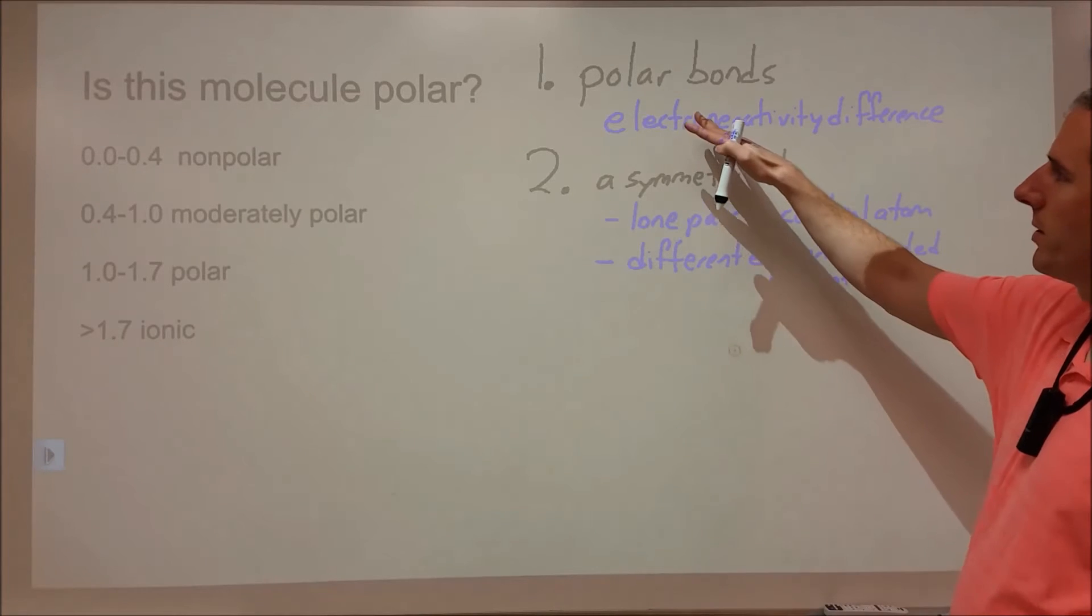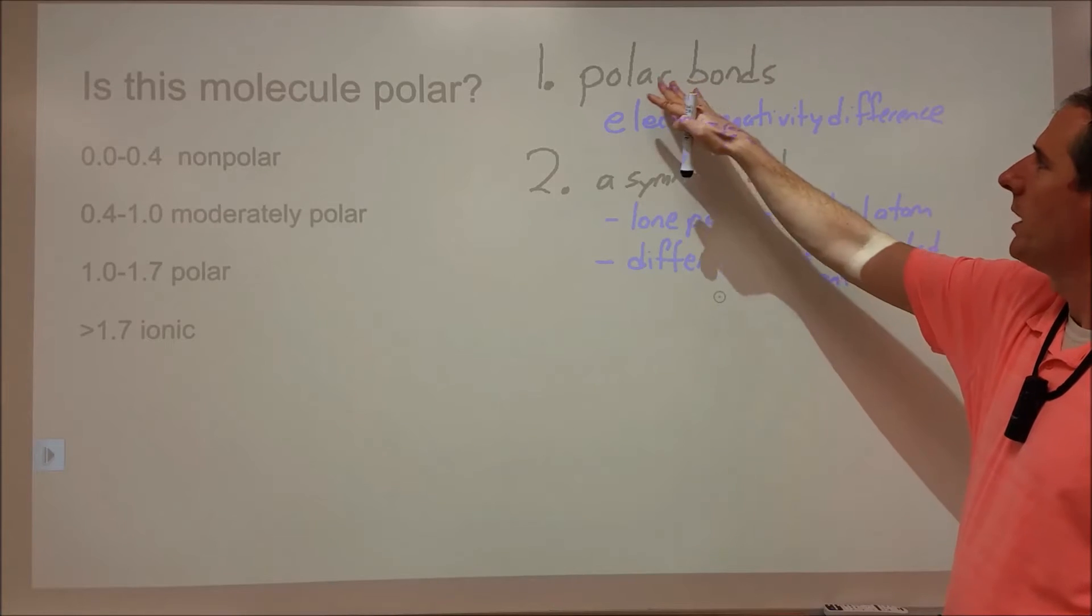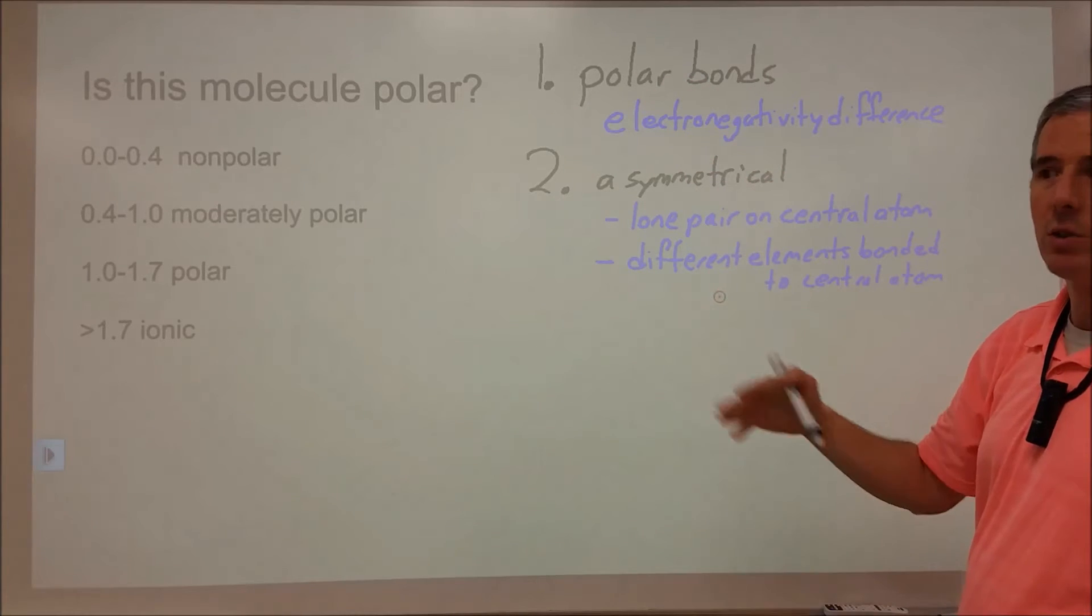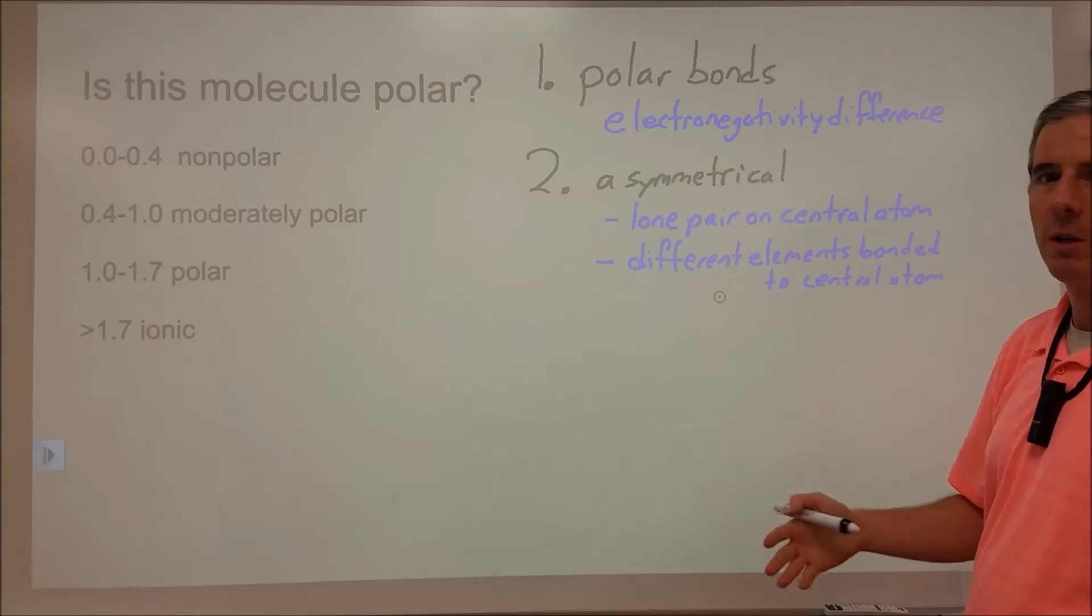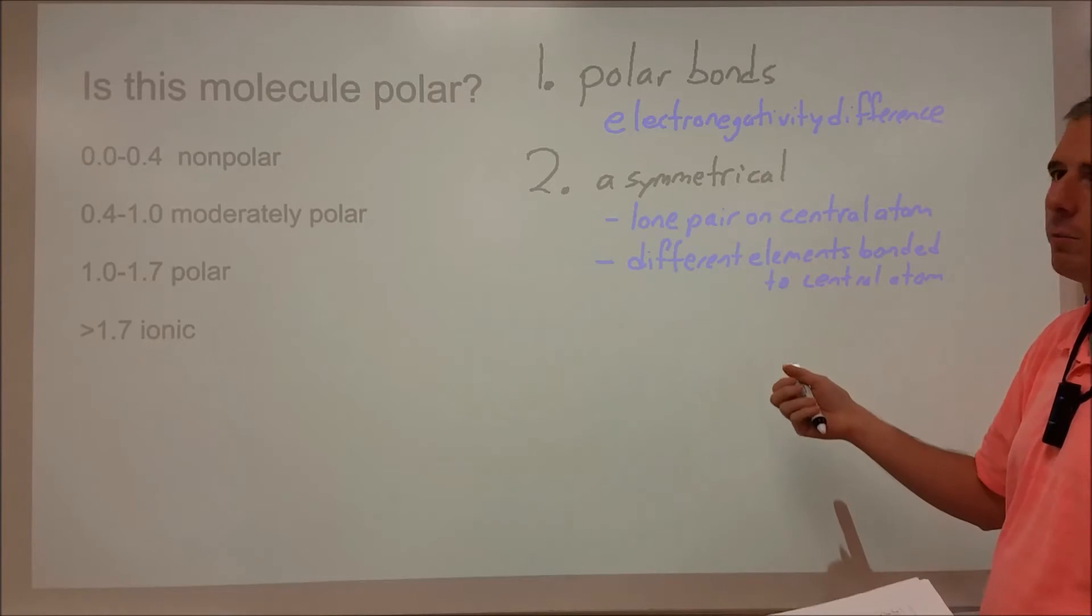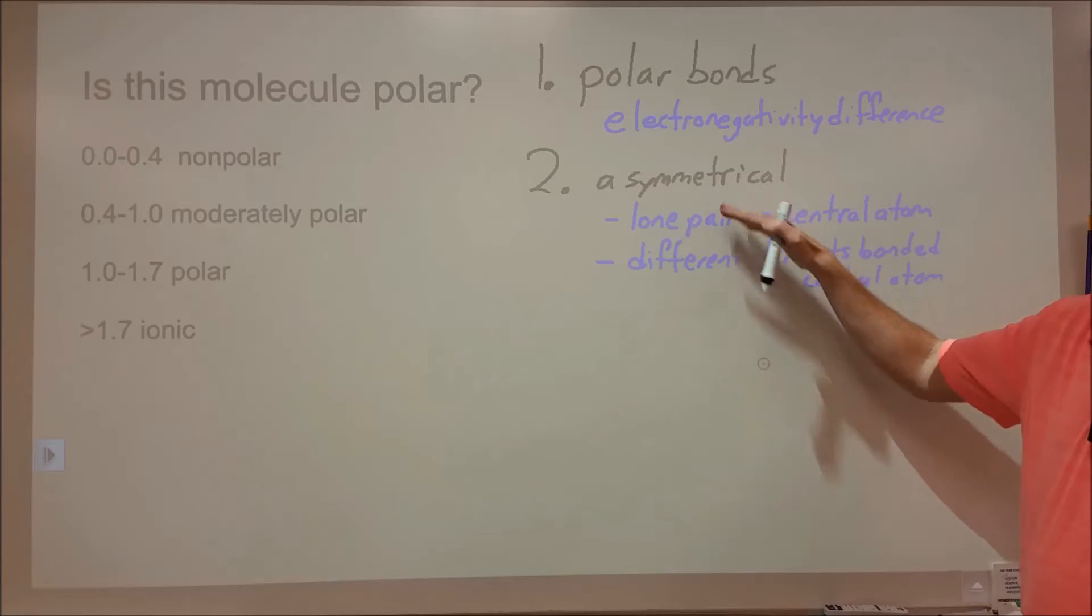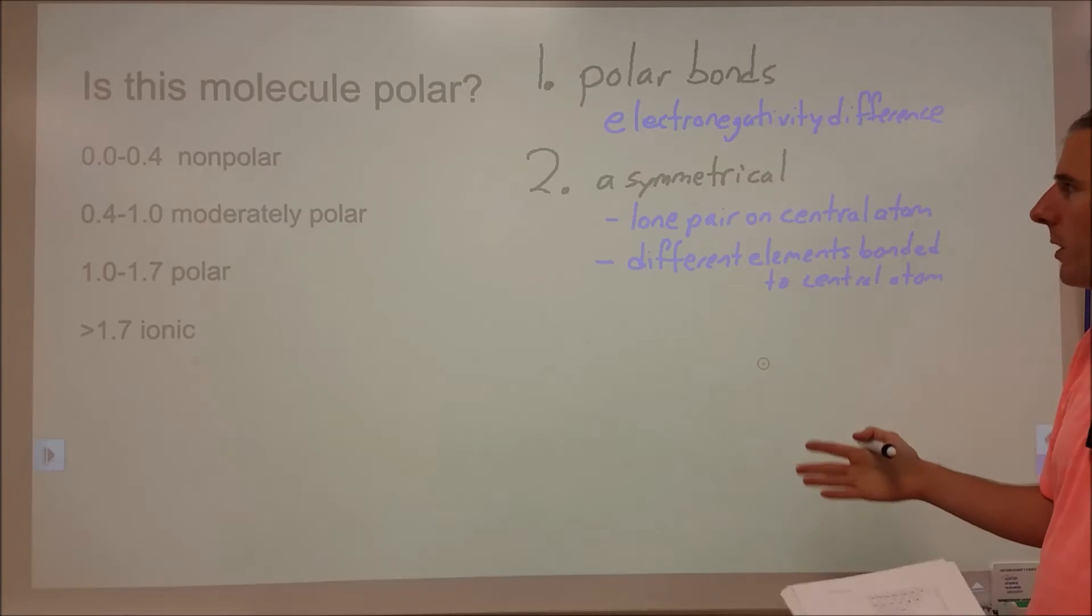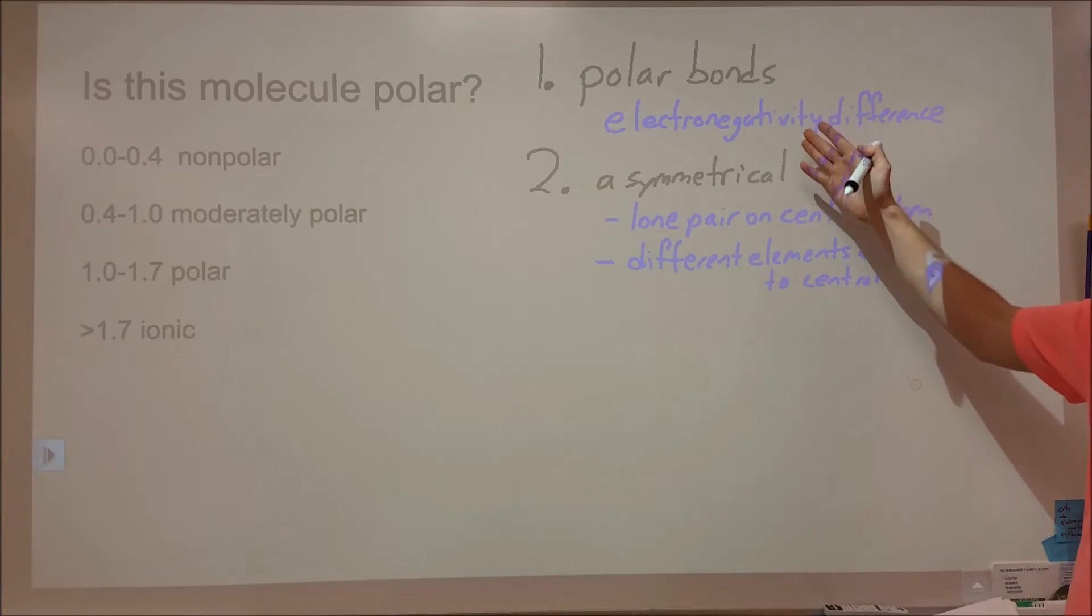Now there are two big things you need to consider for whether a molecule is polar. The first is, are the bonds in this molecule polarized? Do you have a positive and negative end where the electrons are not distributed evenly within the particular bond? And then secondly, do all of those bonds add up in a way that's symmetrical and therefore the net dipole moment of the molecule is zero? So first of all, how do you figure out if bonds are polar? For that you use electronegativity values.